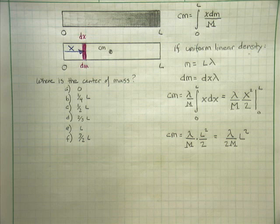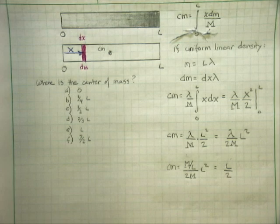You get lambda over 2M times L squared. Wait a second, that doesn't really tell us the center of mass is located one-half the length of the rod. Let's see if we can do more with the variables we have. We know what lambda is: the total mass of that rod divided by the total length. We're dividing that by 2M times L squared, which reduces down to L over 2. We've located the center of mass for that rod of uniform density as being placed right at one-half its length.